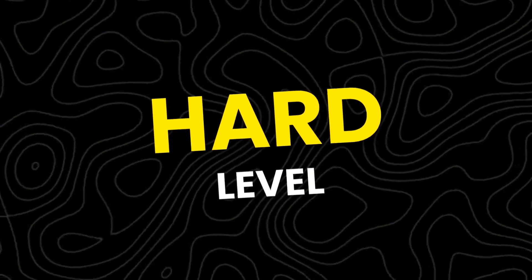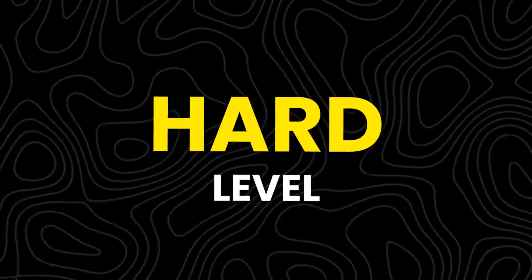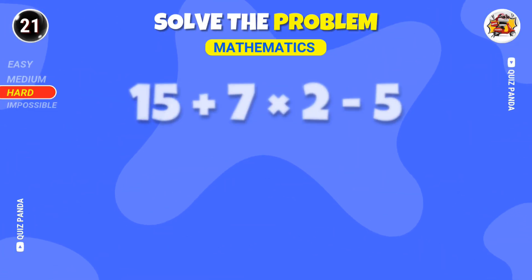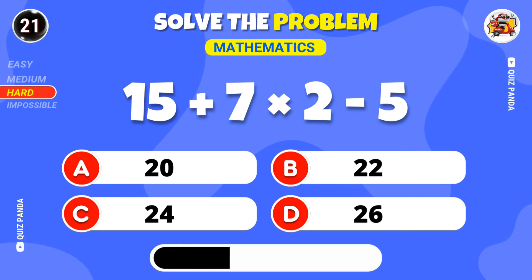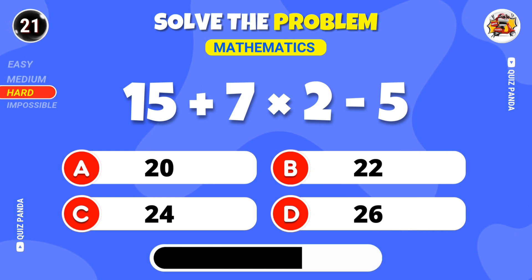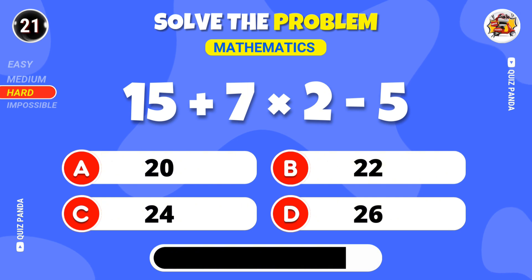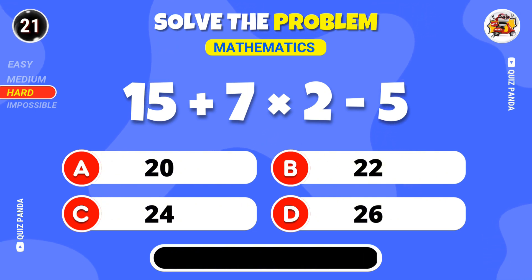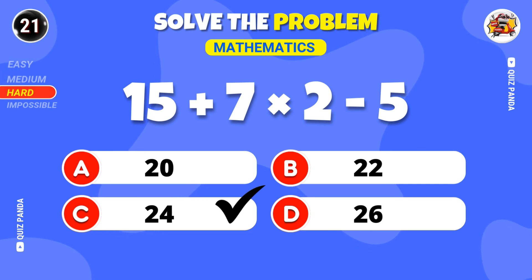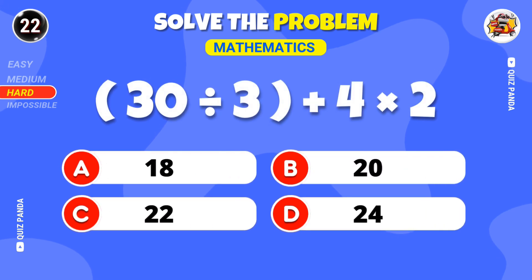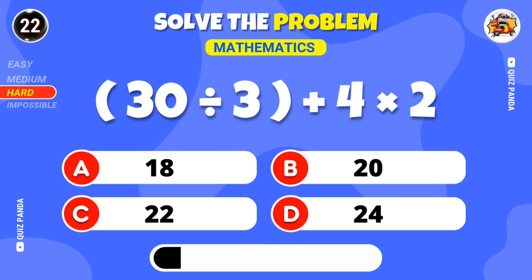Hard level. Can you solve this? 15 plus 7 times 2 minus 5. What's the answer? 30 divided by 3 plus 4 times 2.